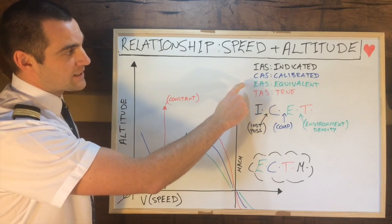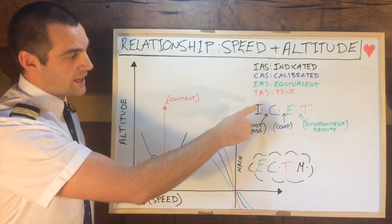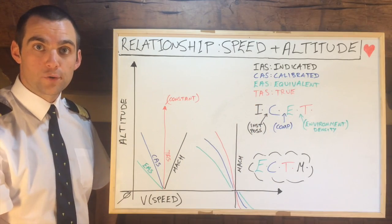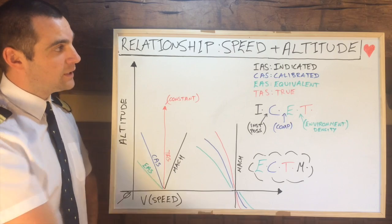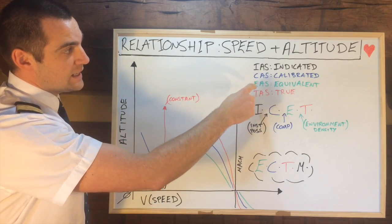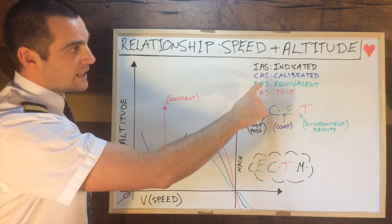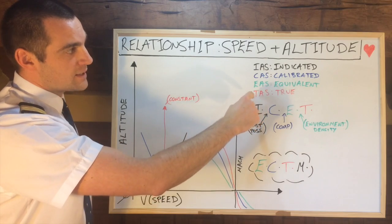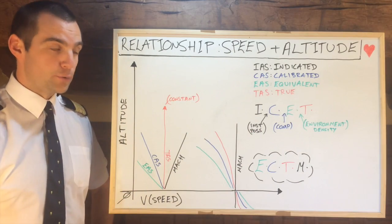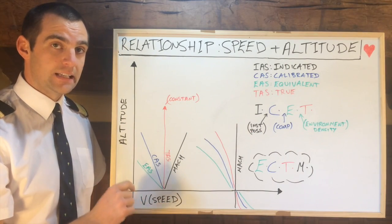So we have IAS, CAS, EAS, TAS, and Mach number. I'm sure you've all seen them written down. The I-C-E-T stands for Indicated, Calibrated, Equivalent, and True. A quick bonus point for this lesson here.